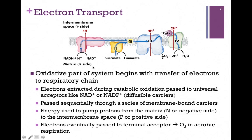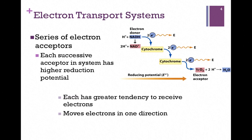The matrix side, since we're losing protons, is getting more of a negative charge, and we call that the N side. The easiest way to remember this is that the matrix is the most internal part of the organelle — it is the N side. As we pass these electrons along, keep in mind that what's driving the flow of electrons is reduction potential. Each successive acceptor in the system has a higher reduction potential, a greater likelihood of receiving those electrons, and so they flow down the energy gradient. In the process, we recover some energy, which keeps the electrons moving in one direction.